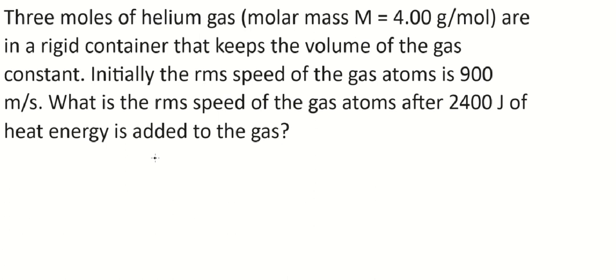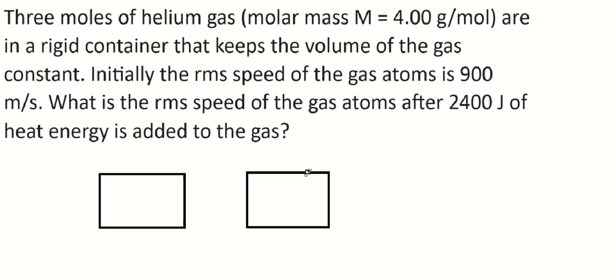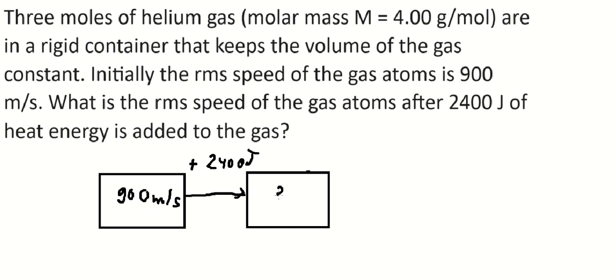Hey guys, welcome back to my channel. Today I want to show you how to find the root mean square speed of helium. The first thing we do is draw the diagram. We know that before we add about 2400 joules, the initial RMS velocity is about 900 m/s. Now if we add about 2400 joules, there will be a new RMS speed.